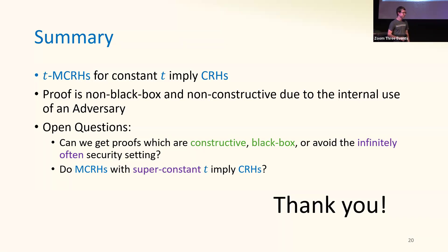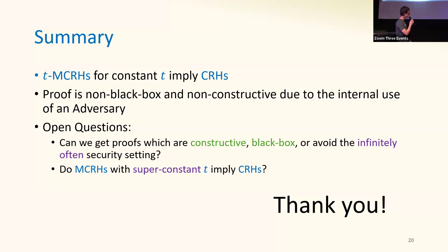Any questions? If there is a question from the chair: if you don't care about the compression parameter, is it possible to extend to super-constant T implying two-collision-resistant hash? We don't know how to do this. Basically, each time you take a square root in the collision-resistance parameter, you need an adversary. Once the collision-resistance parameter you start with is super-constant, you would have to define a super-constant number of inversions, and the inversion size would vary — so the constant T seems to be a barrier for these approaches.